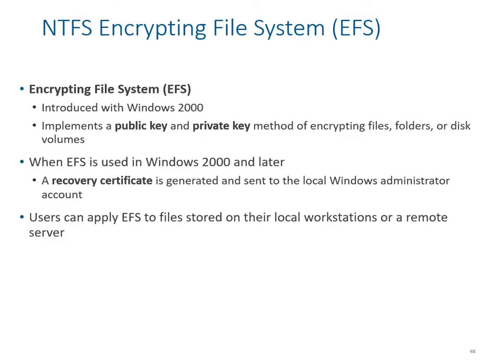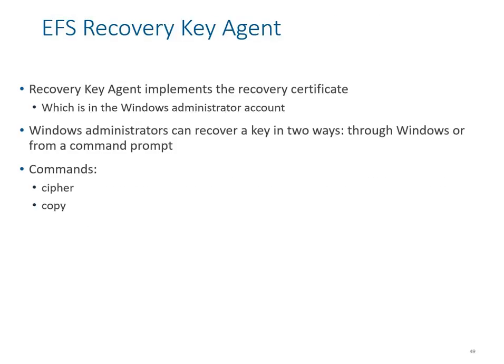Encrypting File System (EFS) was introduced in Windows 2000 and implements a public key and private key system. When encrypting files, folders, or volumes using EFS, a recovery certificate is generated and sent to the local administrator account, which can be used to decrypt files. Make sure to have a proper backup of the encryption key, because if you lose it, you lose access to everything.